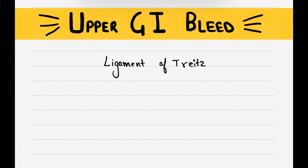Now let us discuss the causes of upper GI bleeding. So the most common presentation in upper GI bleeding is hematemesis. This is the most common presentation.